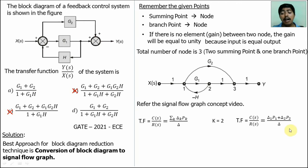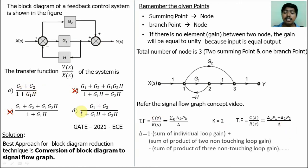Now find the delta value. If you find the delta value, we can eliminate any one of the options. Delta is 1 minus sum of individual loop gain plus sum of product of 2 non-touching loop gain minus sum of product of 3 non-touching loop gain. Find the loop gain. There is only one individual loop gain. This is individual loop. But this is not an individual loop, it is forward path. This is individual loop gain. Only one individual loop gain. So apply here, individual loop gain is minus G1H. So delta is equal to 1 plus G1H.